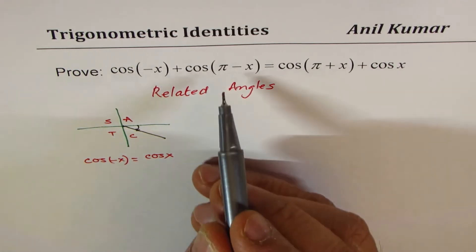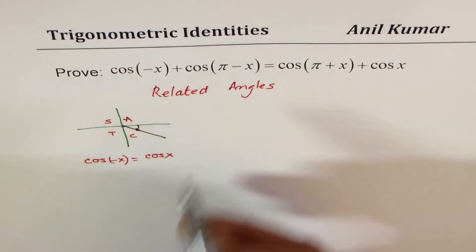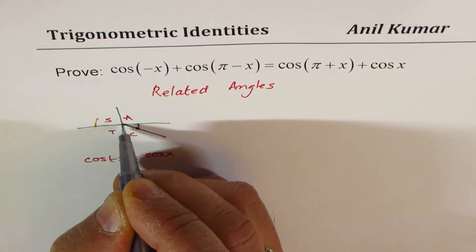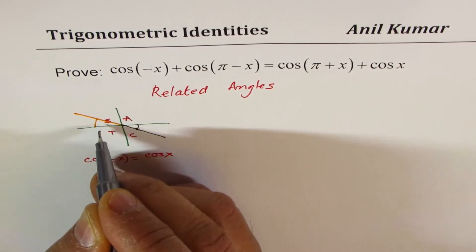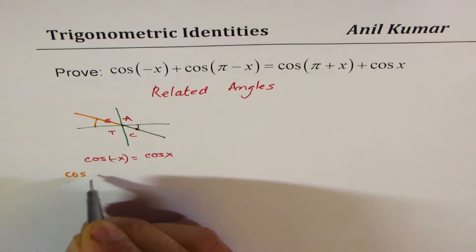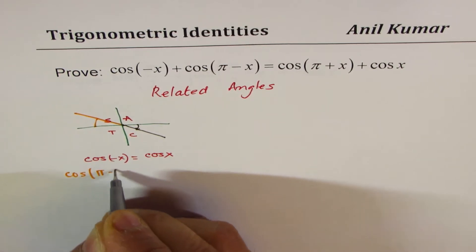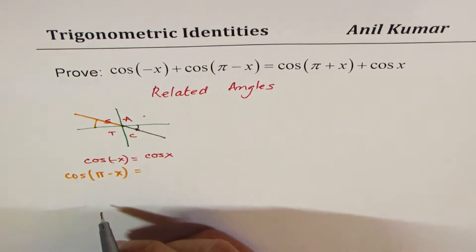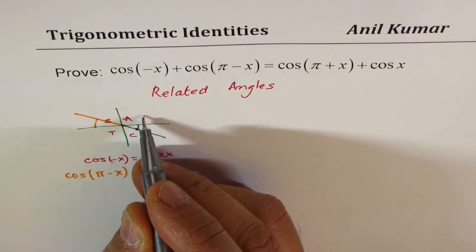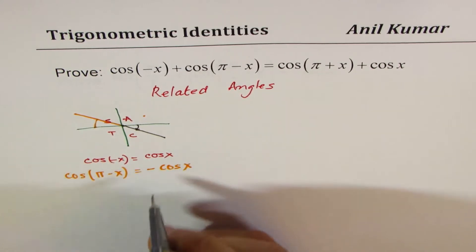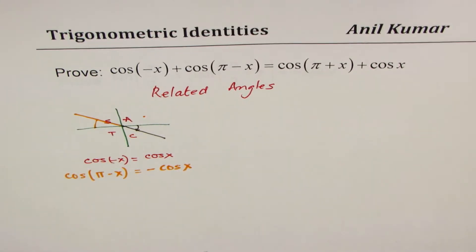Now let's look into cos(π - x). π - x means we are in quadrant 2. Here cos is negative. So when we write cos(π - x) in terms of its related acute angle, since cosine is negative there, we get minus cos(x).